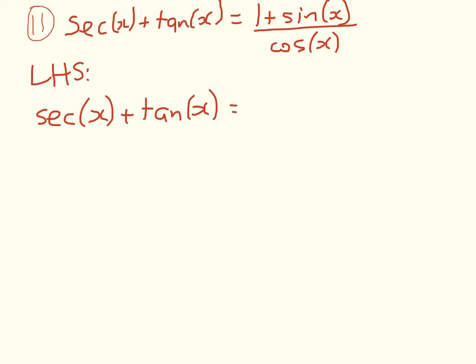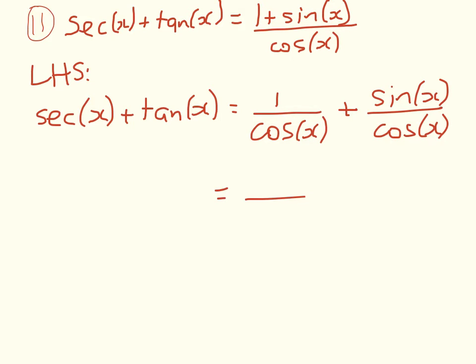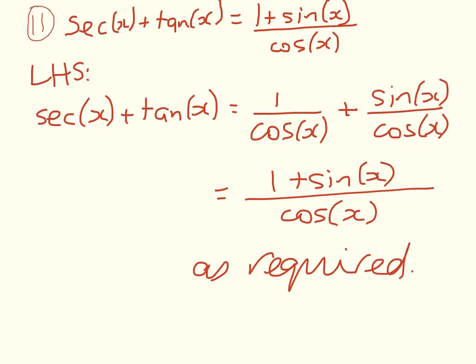And then we go sec of x is 1 over cos of x plus tan of x is sin of x over cos of x. So that all equals 1 plus sin of x over cos of x as required. So that's that one done.